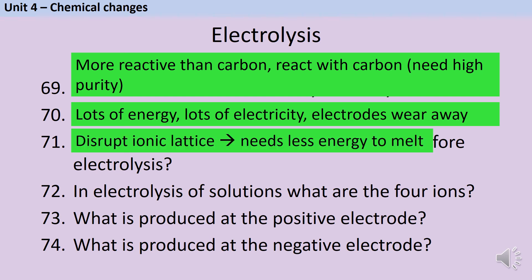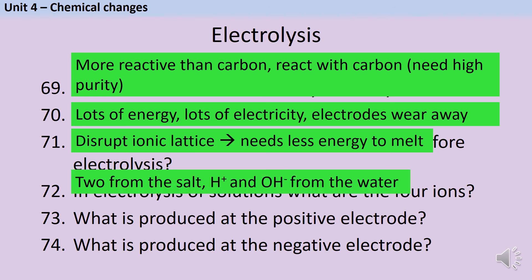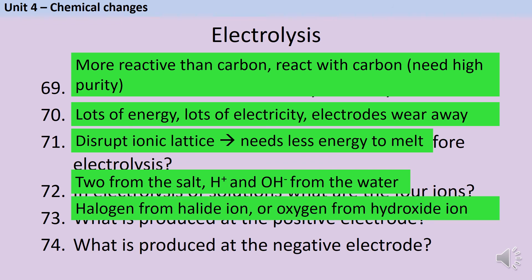In the electrolysis of solutions, there will be four ions: two from the salt, and also hydrogen ions and hydroxide ions from the water. At the positive electrode, the negative ions will be discharged. If a halide ion is present — chloride, bromide, or fluoride — then this will be discharged and you'll make a halogen. Otherwise, hydroxide ions are discharged to make oxygen. At the negative electrode, the positive ions will be discharged: either you'll produce a very unreactive metal such as gold, silver, or copper, or you'll produce hydrogen gas.